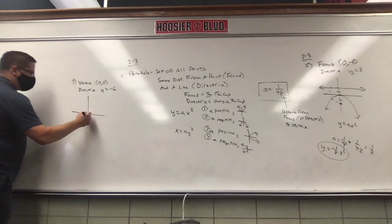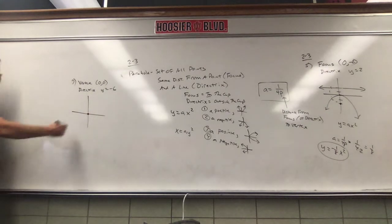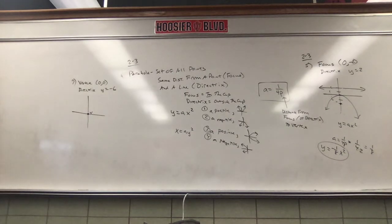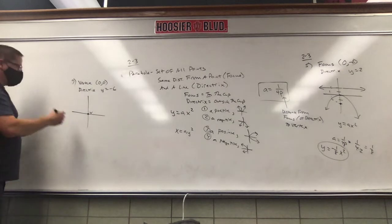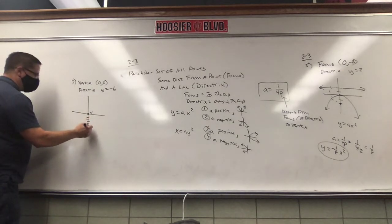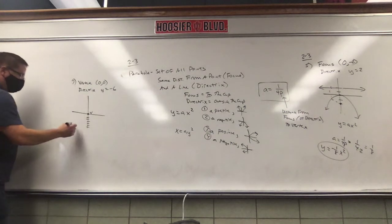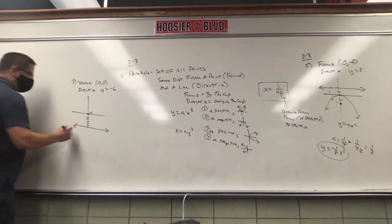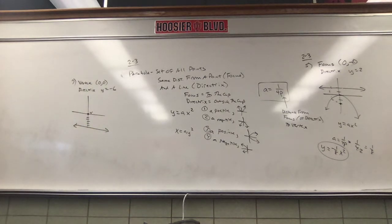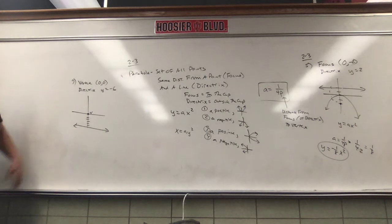Draw a picture. Vertex is (0,0) — I'll label that V. Directrix: where is y equals negative 6? Down 6. The directrix is a line going across. Is this parabola opening up, down, left, or right? It's got to open up — it's got to go away from the directrix.